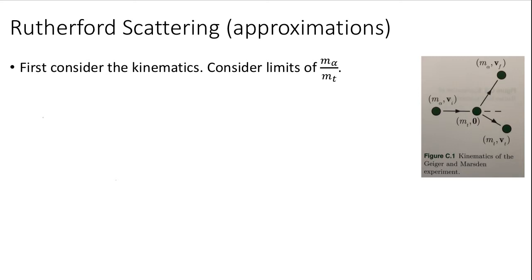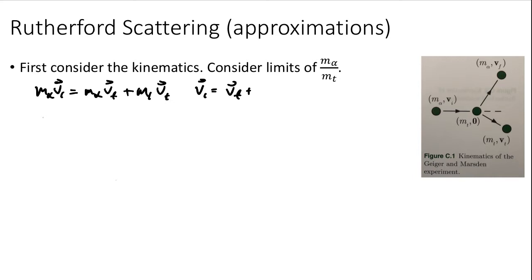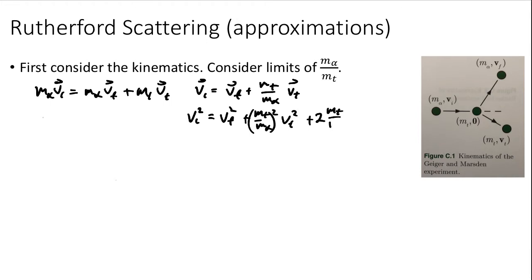Conservation of momentum says that the mass of the alpha times its initial velocity equals the mass of the alpha times the final velocity of the alpha, plus the mass of the target times the final velocity of the target. Dividing through by m_alpha, we find that v_i equals v_f plus (m_t / m_alpha) v_t. We can now square v_i by dotting it into itself, finding that v_i² equals v_f² plus (m_t / m_alpha)² v_t² plus the cross term 2(m_t / m_alpha) v_final · v_target.